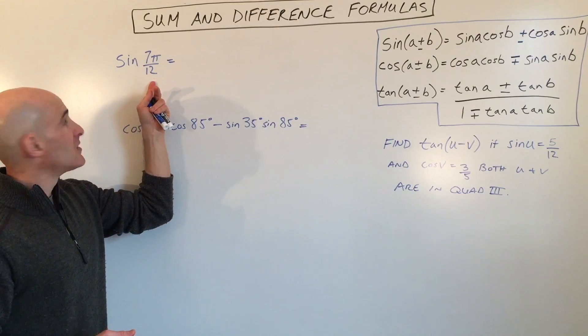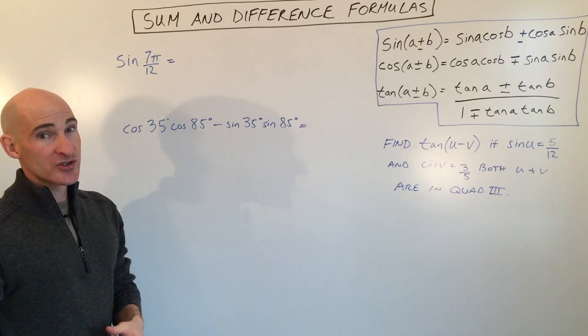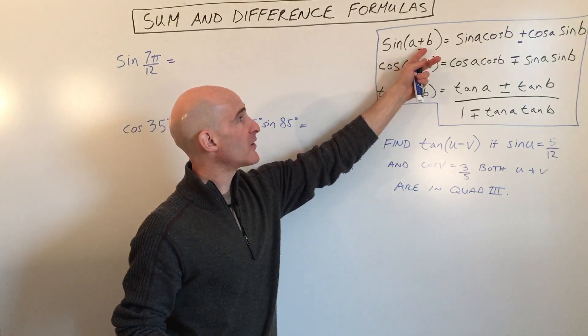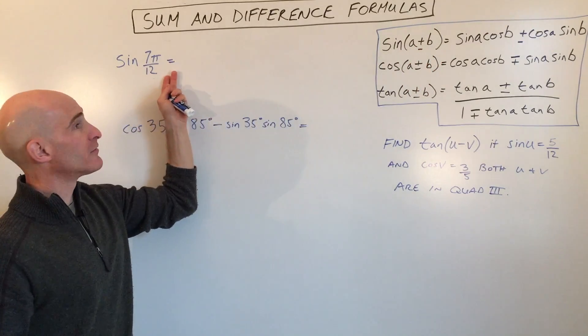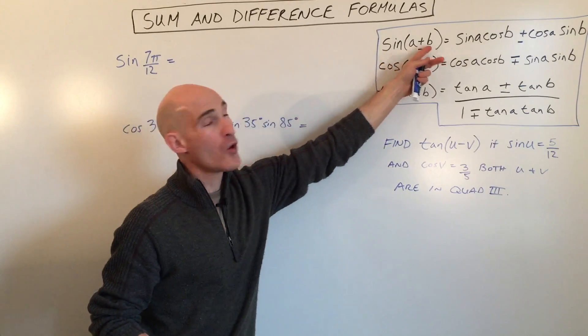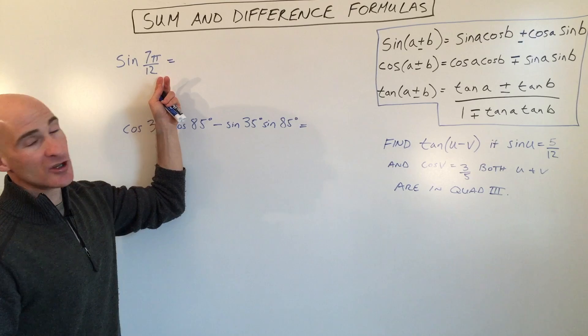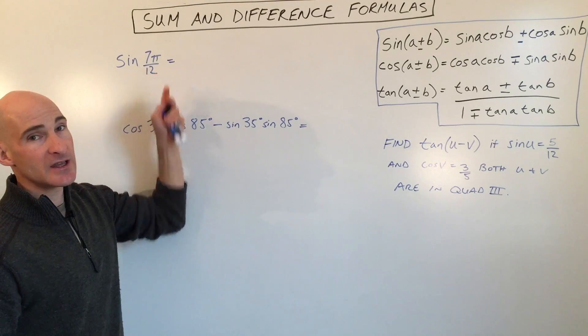Let's say you want to find out sine of 7π over 12. Now this isn't one that we memorized on the unit circle, so what we can do is we can take two angles that either add or subtract to give us 7π over 12 using those two angles that we know on the unit circle. So sometimes students struggle a little bit with radians, so what you might want to do is change 7π over 12 into degrees.